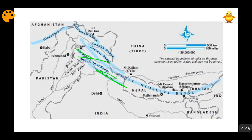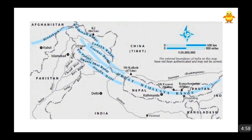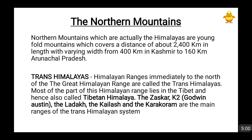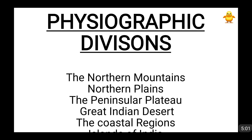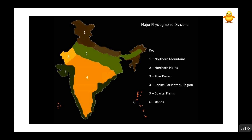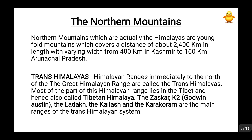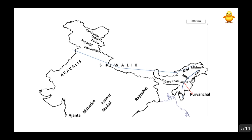In between the great Himalayan range and the Shivalik range comes the middle Himalayas. Then the eastern Himalayas run along the eastern edge of India, in the northeast area. I will be talking about them in a separate video.